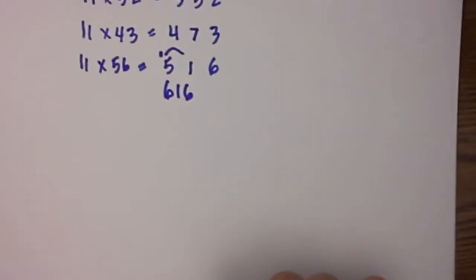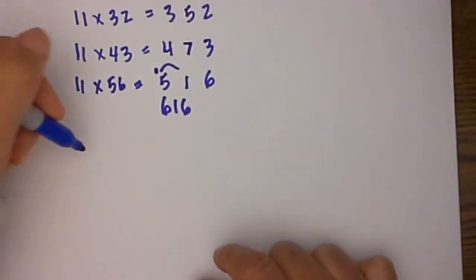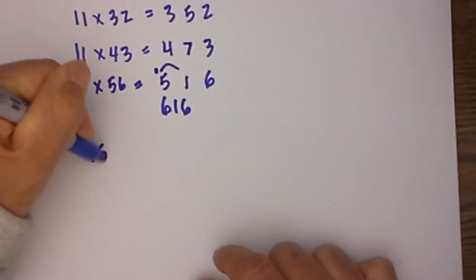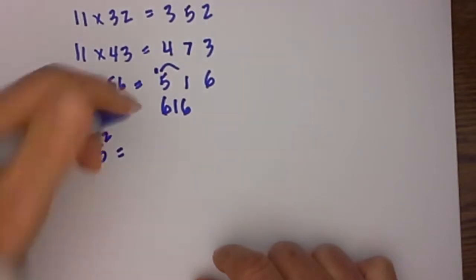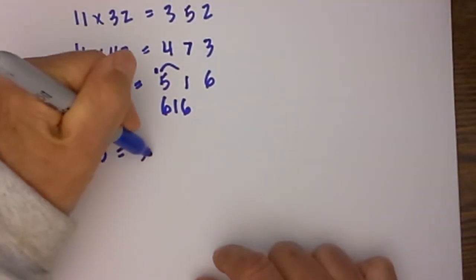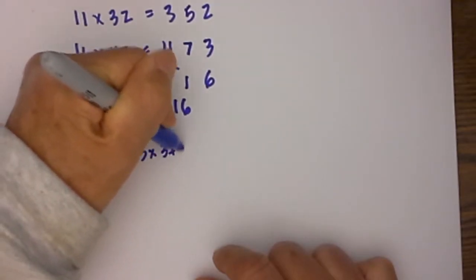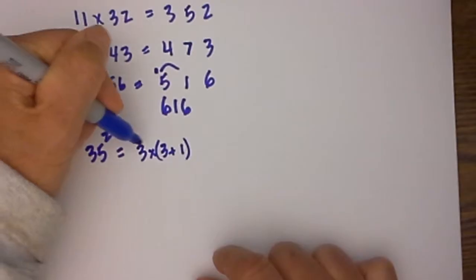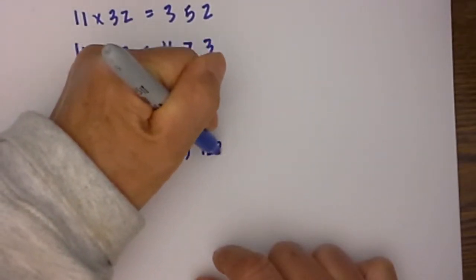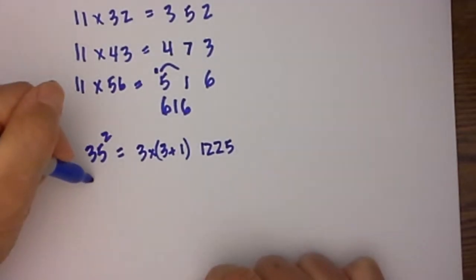Next up, let's look at squaring a two-digit number that ends in 5. Say we have 35 squared. Simply multiply the first digit times the first digit plus 1, which is equal to 4. That becomes 12, and then tack on a 25 at the end. Makes it really simple.